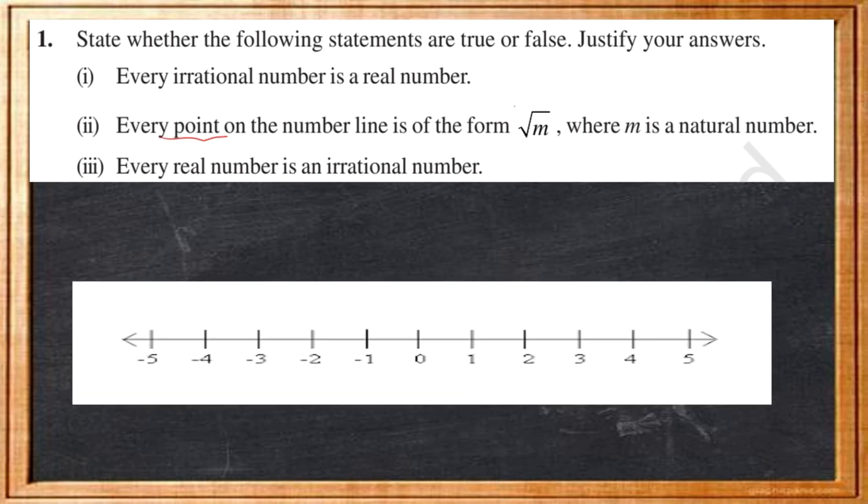Statement 2 says, every point on the number line is of the form root m where m is a natural number. Consider a number line. We can represent negative as well as positive numbers. Positive numbers can be represented in the form like root 1, root 2 and so on. But, when we write square root of negative numbers like root of minus 1, it will become a complex number, which is denoted by iota, which you will learn in higher classes. So, we cannot say that every point on the number line is of the form root m.